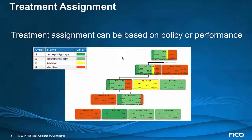Once you have your segmentation done, you'll want to assign treatment. The treatment is an action that you would consider taking on that segment of accounts. Typically, the treatment is based on a combination of policy and performance. Here we're looking at bad rate as well as average revenue, and we're assigning a variety of origination decision treatments.